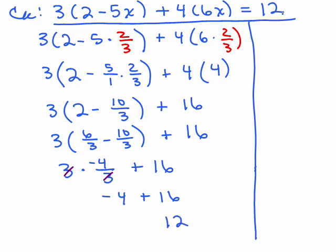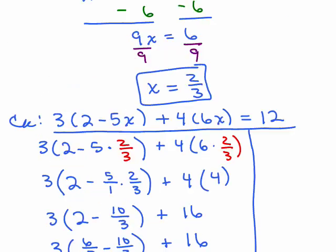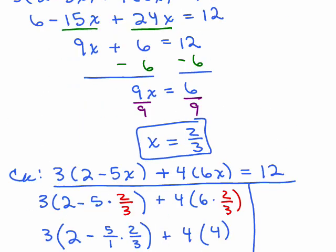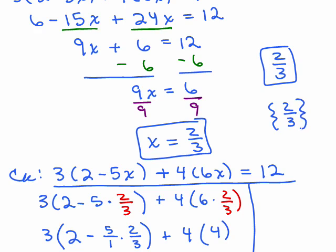Now let's see what was on the other side. Did all my arithmetic correct, and it's 12. That means x equals 2/3 is the correct answer, because it checked. So the answer is either 2/3, or the formal way is writing the answer in solution set. And if you want, you could put a box around it just so somebody could find the answer.